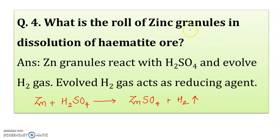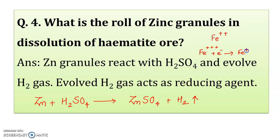Remember one thing: in this experiment number 1, we need the iron Fe in the plus 2 state. This evolved hydrogen gas is going to maintain the plus 2 state of the iron. If the solution consists of Fe³⁺ ferric ions, they are reduced to Fe²⁺. So zinc granules are added to evolve hydrogen, and that hydrogen gas acts as a reducing agent.